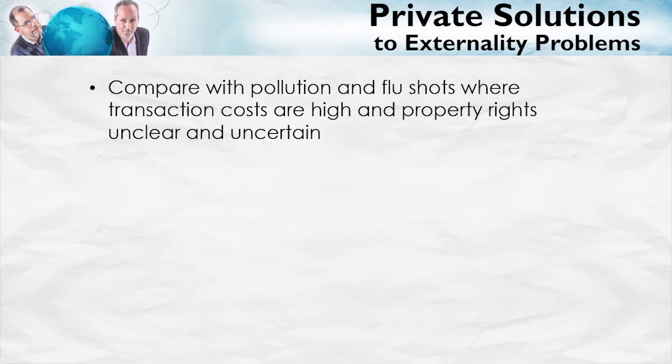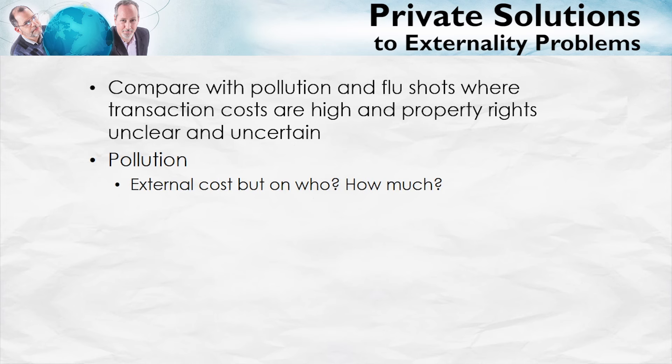Let's compare with pollution and flu shots. In both cases here, the transactions costs are high and property rights are unclear and uncertain. Consider pollution. There's an external cost. The factory is putting lots of pollution up into the sky. But on who? It's not necessarily on the people who live right next door to the factory. The pollution could be causing acid rain, which is ruining lakes hundreds of miles away. Or it could be causing global warming, which is increasing sea levels and ruining people's lives thousands of miles away. And exactly what are the costs? How much? How can we measure these costs? It's not obvious.